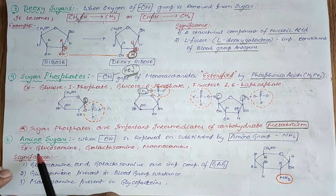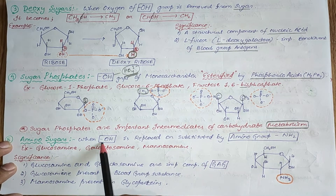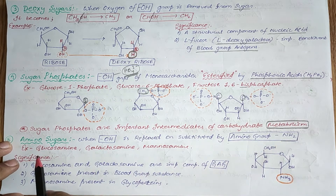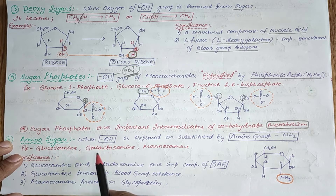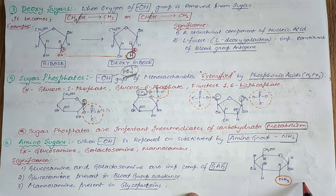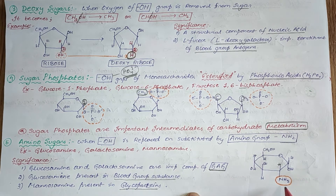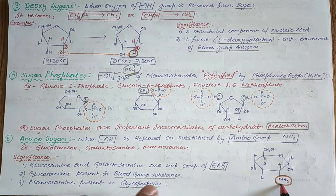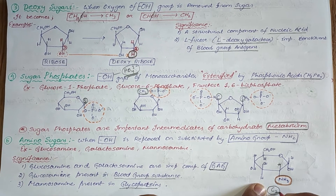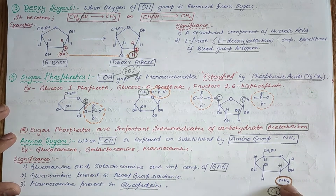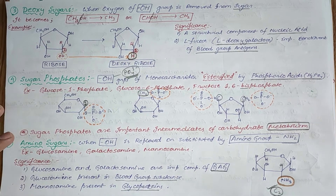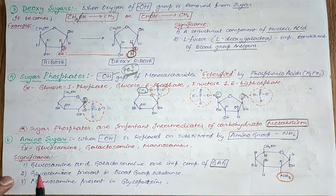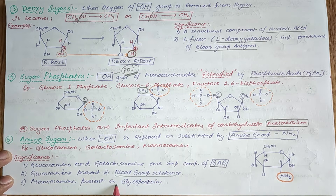Amino sugars: when the hydroxyl group of a monosaccharide is replaced or substituted by an amino group (NH2), it is called an amino sugar. Examples include glucosamine, galactosamine, and mannosamine. The amino group is mostly present at the C2 carbon in amino sugars. Glucosamine and galactosamine are important components of glycosaminoglycans; glucosamine is present in blood group substances, and mannosamine is present in glycoproteins.